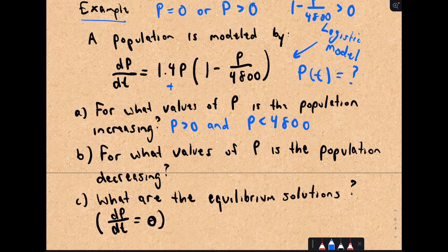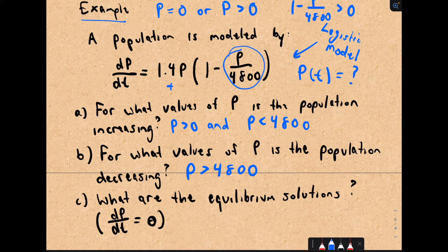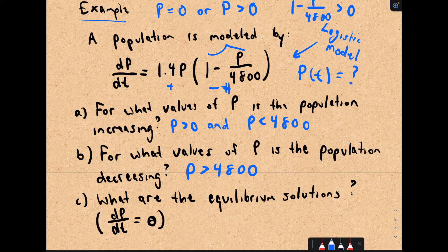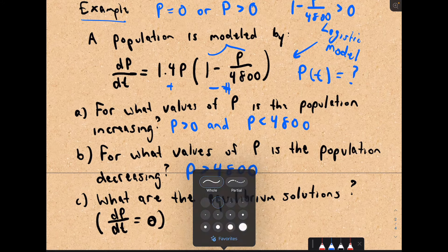For what values of p is the population decreasing? That's when the population is greater than 4,800. If p is greater than 4,800, then p over 4,800 is larger than 1, which means 1 minus that gives a negative number. Since the population itself is already positive, the change in population is negative — meaning the population is decreasing. Again, I don't know the population model, but I'm getting information just by thinking about the differential equation.